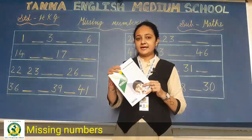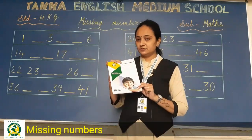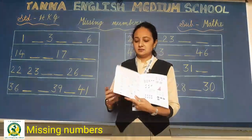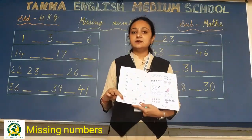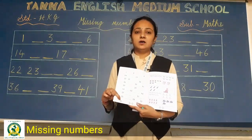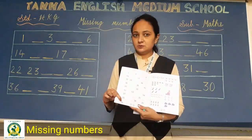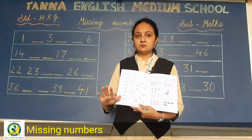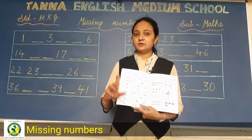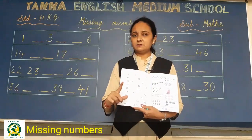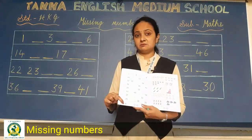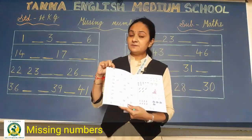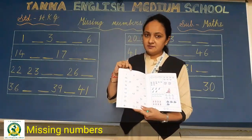So you have to take out your maths CW book, okay. And then you have to take out page number 18, page number 18. So now see, what is it written? Missing numbers.